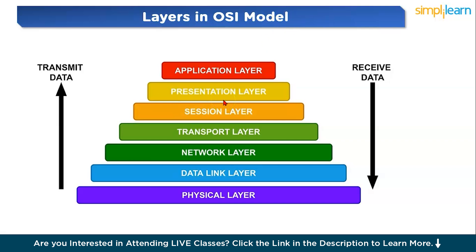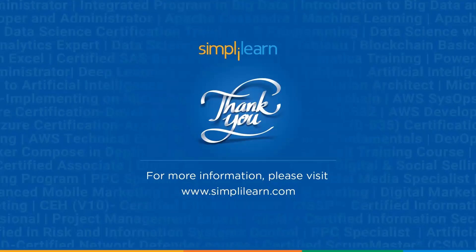The Presentation Layer is like the document formatter, formatting the contract to ensure readability. Finally, the Application Layer is like the recipient's office, where the final document arrives ready to use. This is how the seven layers of the OSI model work in networking protocols. I hope you've enjoyed today's session on networking protocols.